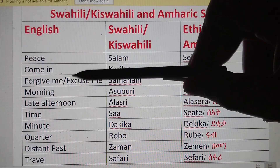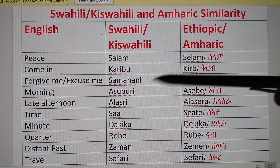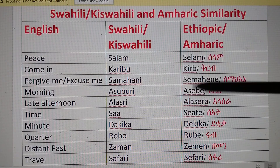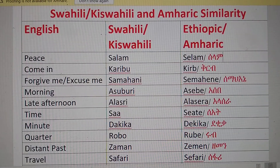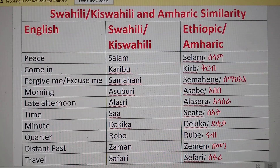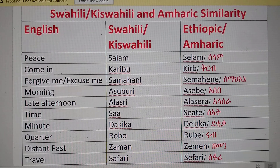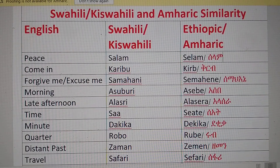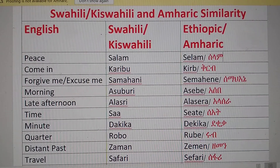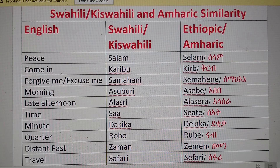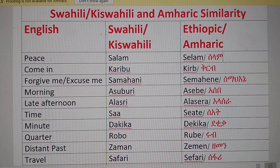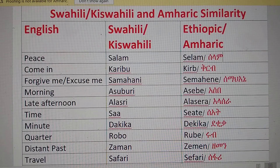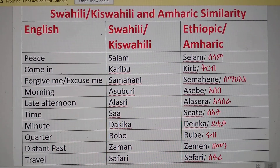The next word is 'forgive me' or 'excuse me.' In Swahili it is 'Sammahani.' If you take that as an Amharic word, Sammahani gives the meaning of 'listened' or 'heard I' — it conveys the sense of 'listen' or 'heard.' So even though it's not the exact definition, it gives a close meaning to 'forgive' or 'excuse.'